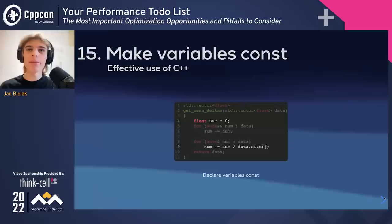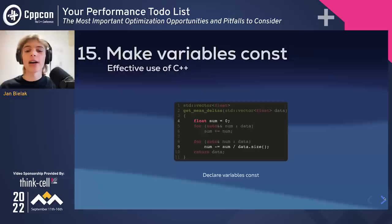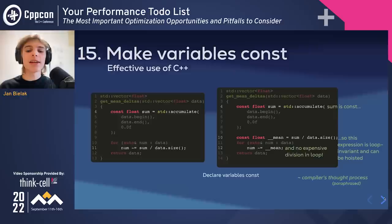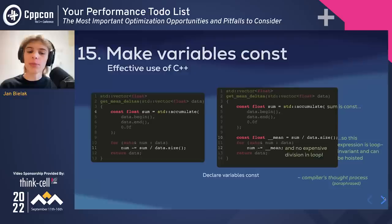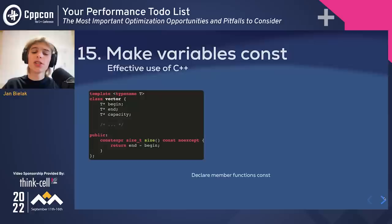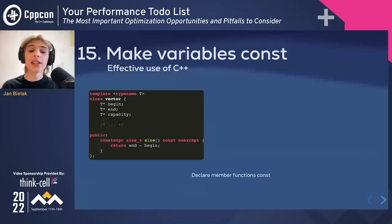Next, we have const. Basically, if you can't make a variable constexpr or constinit, see if you can make it const. Although compilers are often smart enough to notice that a variable's value never changes, it doesn't hurt to help. Knowing that a variable is const allows the compiler to perform optimizations like hoisting. Apart from declaring an object const, remember to mark member functions const if they don't mutate the object. Unfortunately, the compiler can't be certain the function really doesn't modify state, as it's possible it uses const_cast — but it doesn't hurt to be const correct.